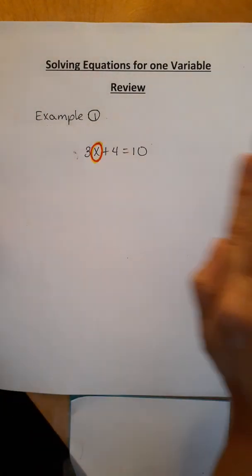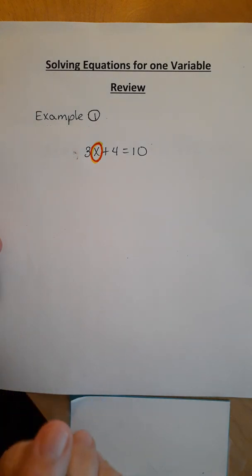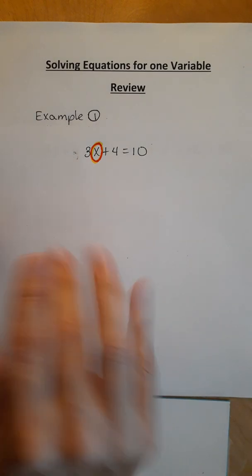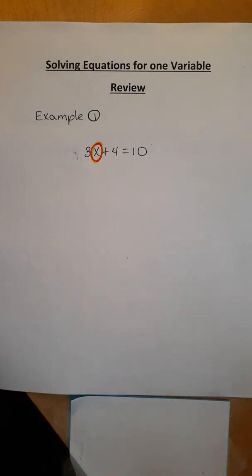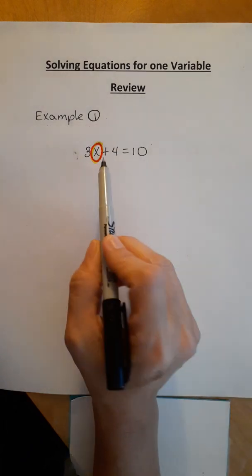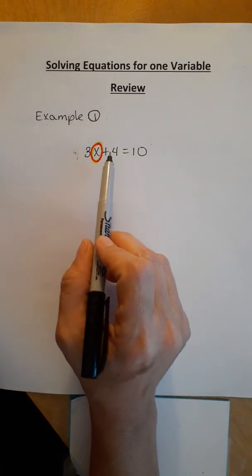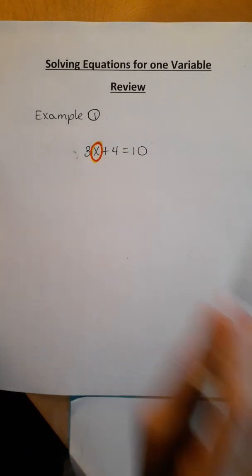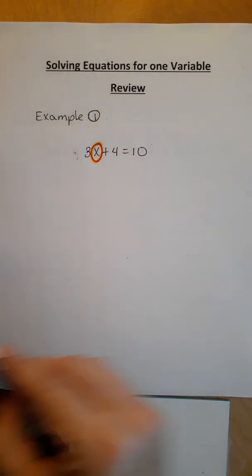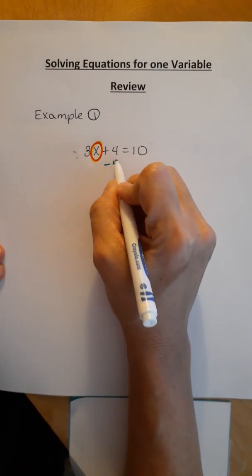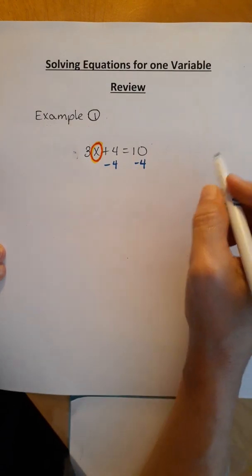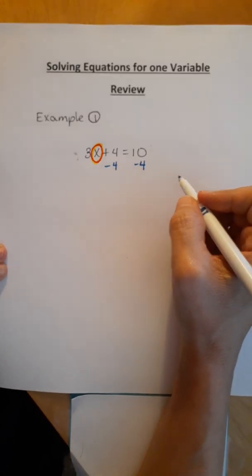Everything around it has to move to the other side so it could say x equals whatever number it is. The first thing I have to do is what is added or subtracted to the x. And what I have added or subtracted is plus 4. So I'm going to go ahead and do the opposite of adding 4. I'm going to subtract 4 from both sides. We call that the subtraction property of equality.